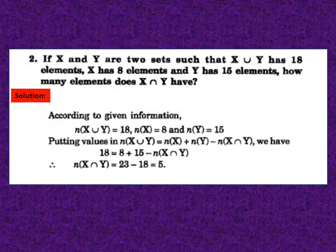Question 2: if X and Y are two sets such that X union Y has 18 elements, X has 8 elements and Y has 15 elements, how many elements does X intersection Y have? NX union Y equals 18, NX equals 8, NY equals 15. Using the formula: 18 equals 8 plus 15 minus NX intersection Y. After simplification, NX intersection Y equals 23 minus 18, that is 5.